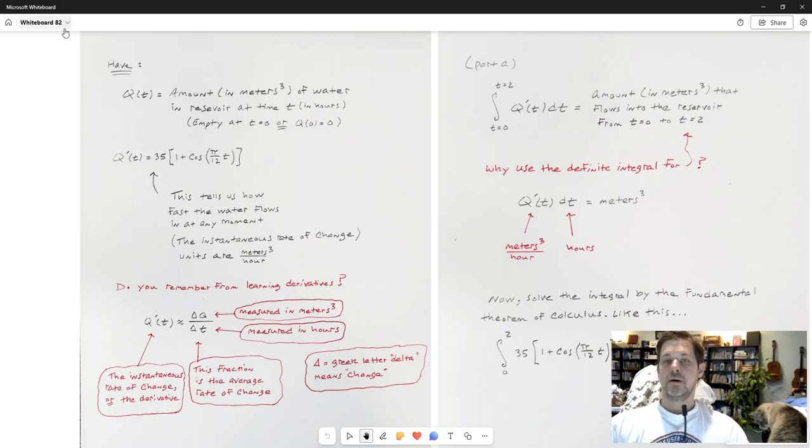Let me go to my work and summarize the problem. I've got two things: there's this function q(t), which tells me the amount in cubic meters of water in the reservoir at any time, times measured in hours. In addition to that, it's empty at time t equals 0, or q(0) equals 0.